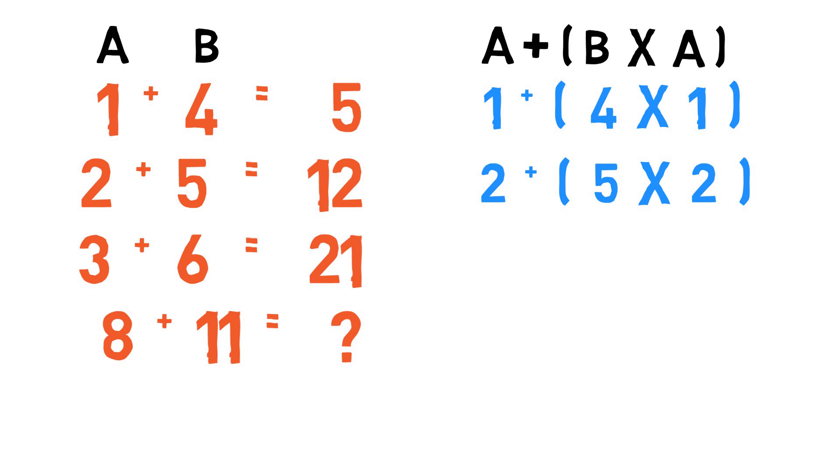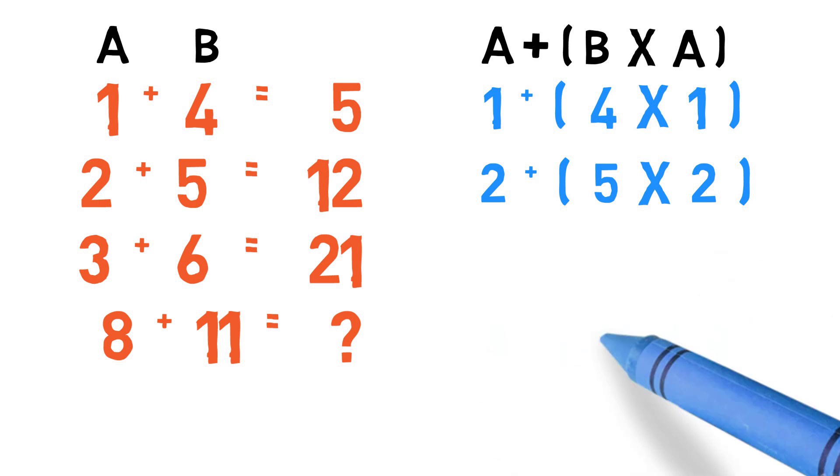It does, right? So since we have a working pattern, let us apply it to the fourth line. We get 8 plus 11 times 8, which gives us 96.